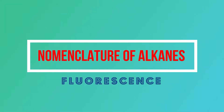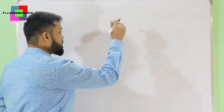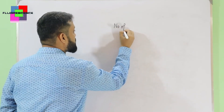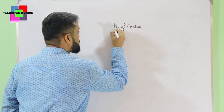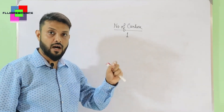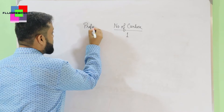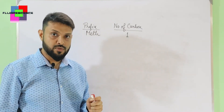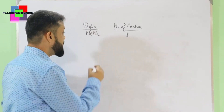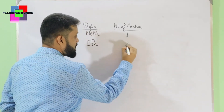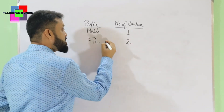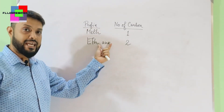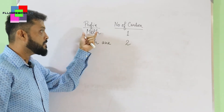Hello everyone, today we learn about the IUPAC nomenclature of alkanes. Before we start with the nomenclature, we should know something called word roots. Suppose a compound has one carbon in it — in that case we will use a prefix called 'meth'. These are called word roots. When we have two carbon atoms we use 'eth'. After this prefix we add the suffix: for alkanes we add '-ane', so 'meth' becomes 'methane'.